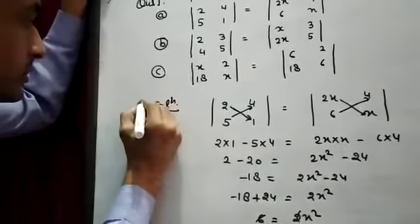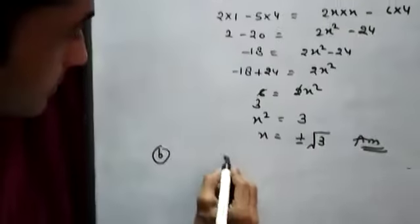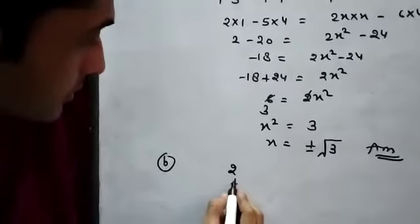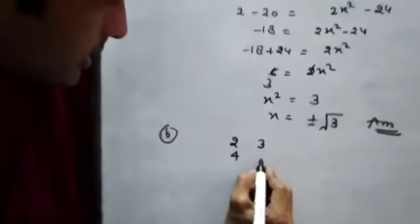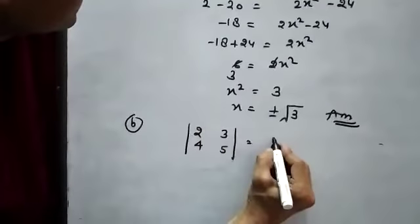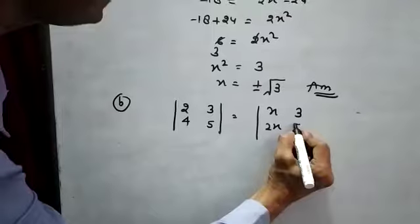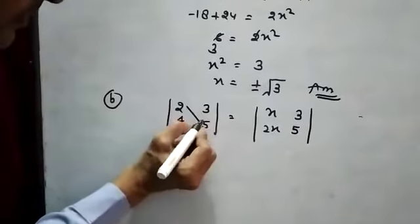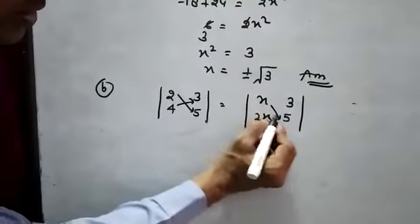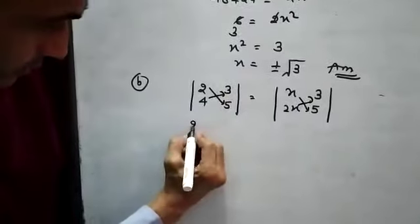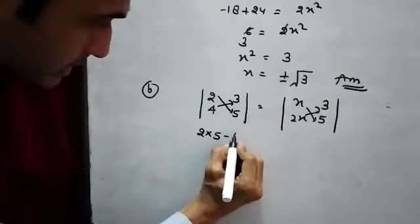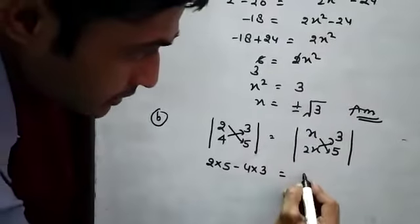Same as student look. Second part. 2 times 5 minus 4 times 3 equals student. 2 times 5 minus 4 times 3 equals student.